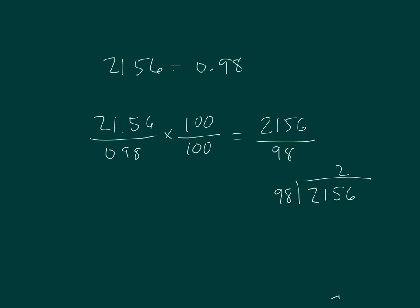First one is 2. 2 times 8 is 16, regroup 1. 2 times 9 is 18, plus 1 is 19. And then we can subtract those two. 15 minus 6 is 9. 10 minus 9 is 1. 196 looks familiar.